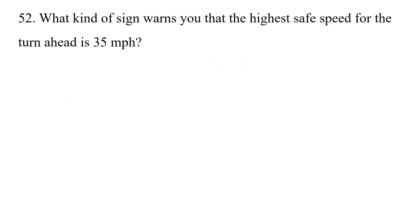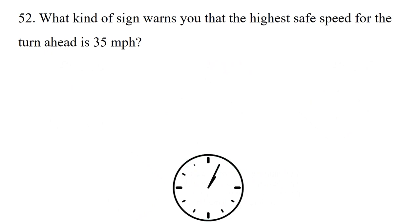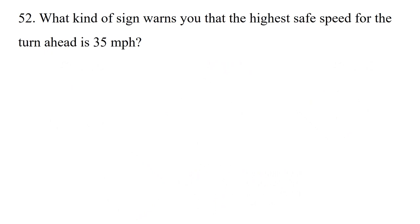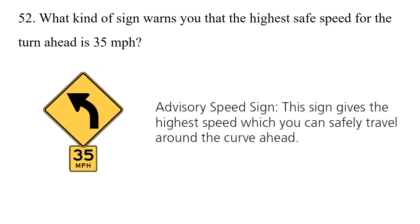Question: What kind of sign warns you that the highest speed for the turn ahead is 35 miles per hour? Advisory speed sign — this sign gives the highest speed at which you can safely travel around the curve ahead.